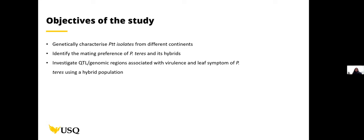To improve our knowledge of the PTT-barley pathosystem, we set three objectives for our study. The first objective was to genetically characterize the PTT isolates from different continents and their hybrids, and to investigate genomic regions associated with virulence and leaf symptoms of PTT using a hybrid population.